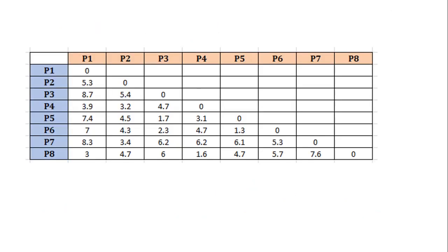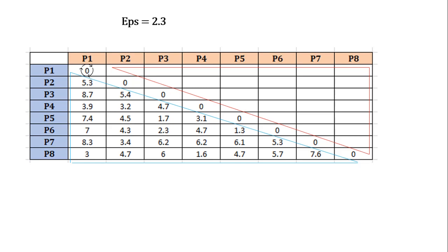On the screen we have a table representing the distance from one point to another. Distance from point p1 to p1 is zero, as distance from itself is always zero. The table is symmetrical, so the left triangle equals the right triangle — we only consider the left triangle and the diagonal is zero. We define epsilon as 2.3 and minimum points as 3. Now we create clusters.